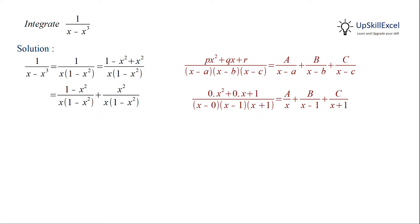Now we can split this into two partial fractions with 1 minus x square as numerator in the first term and x square as numerator in the second term. From the first term, 1 minus x square gets cancelled out leaving us with 1 over x, and from the second term we get x over 1 minus x square.